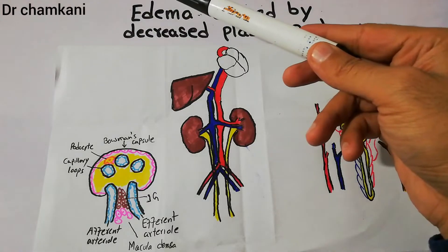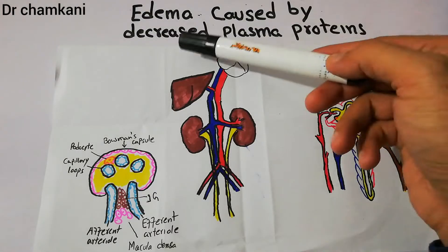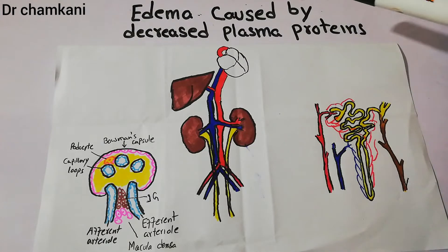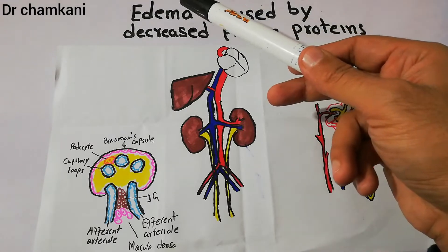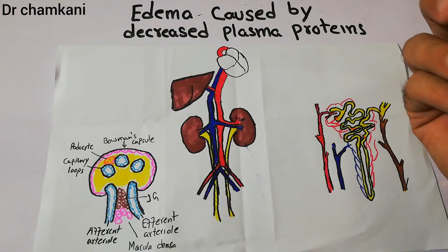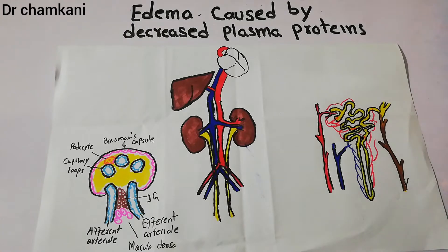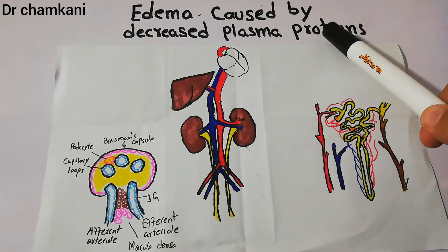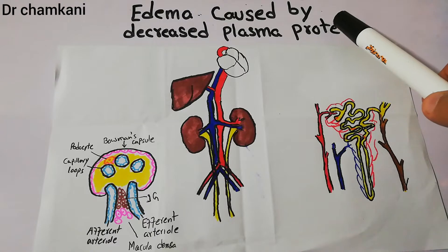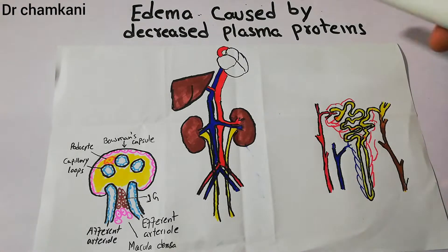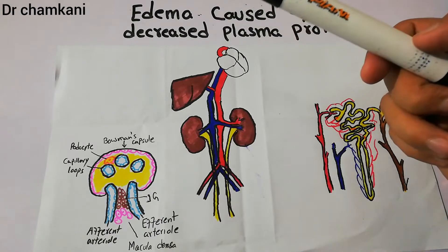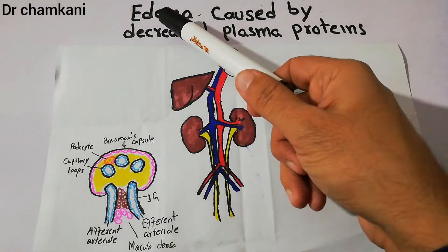Today we will talk about edema caused by decreased plasma proteins — how a low level of plasma proteins leads to edema formation. As we have been discussing edema and its many causes, another important cause is proteins. Proteins in the plasma help against the development of edema, and if the level of proteins decreases in plasma, it predisposes to the development of edema.